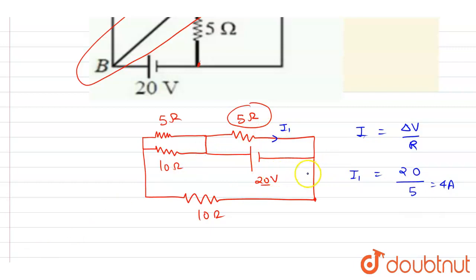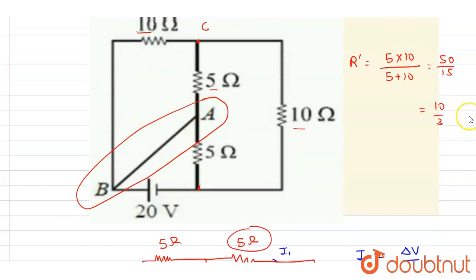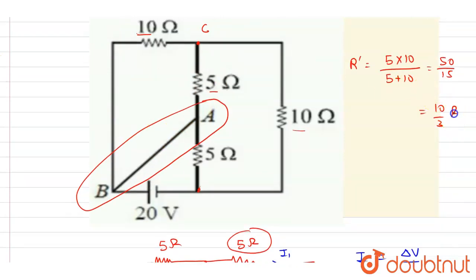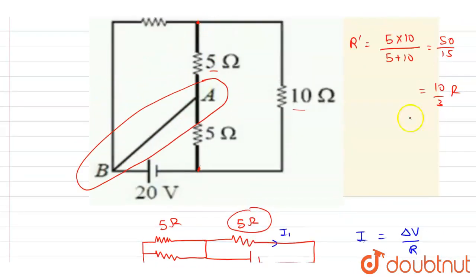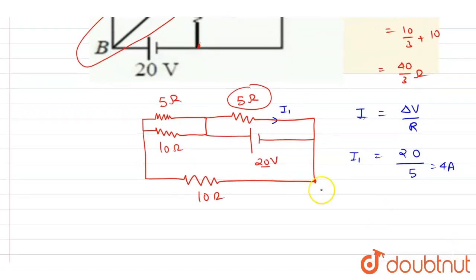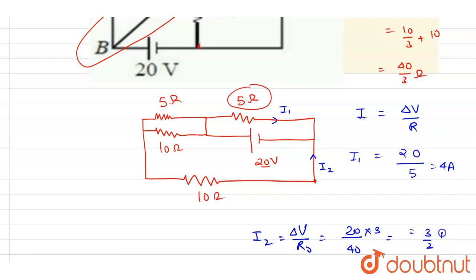Now for the current through the other branch containing three resistances: the parallel combination of 10 ohm and 5 ohm gives 10/3, and this is in series with the 10 ohm resistor. So R_total equals 10/3 plus 10, which is 30/3 plus 10/3... that is 40/3 ohms. The current in this branch is 20 divided by 40/3, which equals 3/2 amperes.